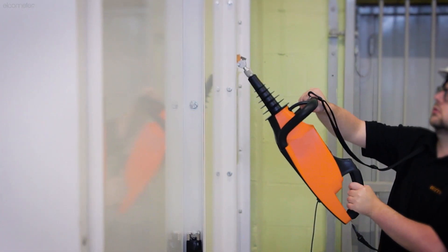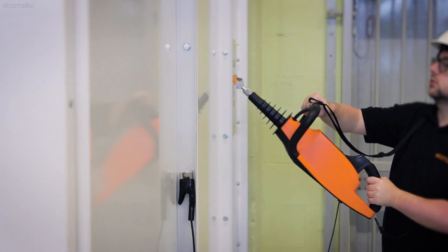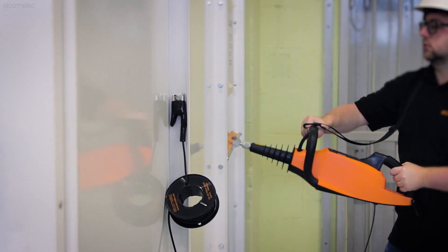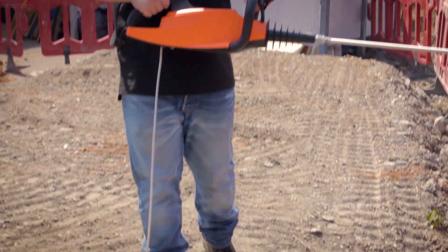But whilst the crocodile clip is the ideal way to test, as you're effectively applying a pulsing voltage between zero and the applied voltage, a pulsed DC unit such as the Elcometer 280 can be used with a trailing earth cable, which doesn't have to be connected to the substrate.